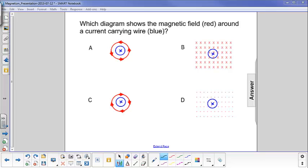Which diagram shows the magnetic field red around a current-carrying wire blue? Well, let's first examine the wire.